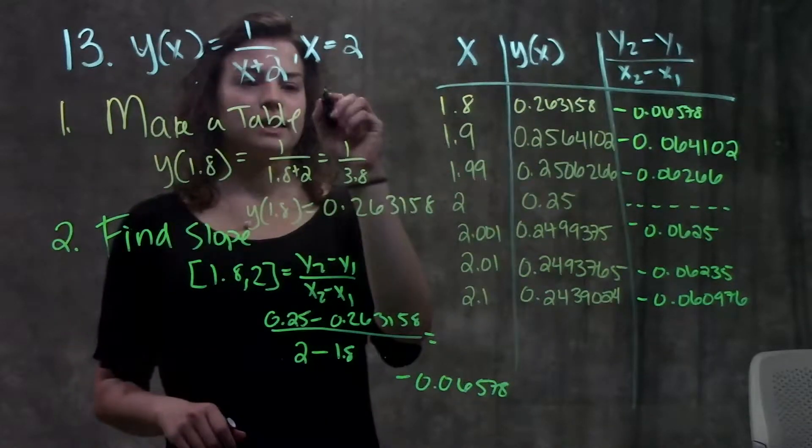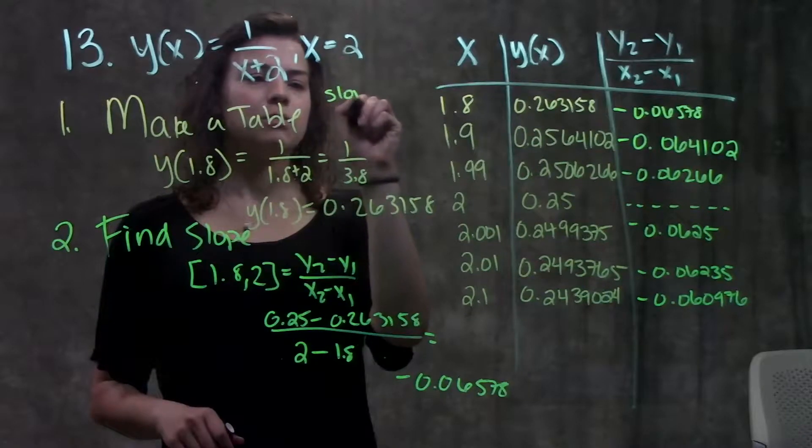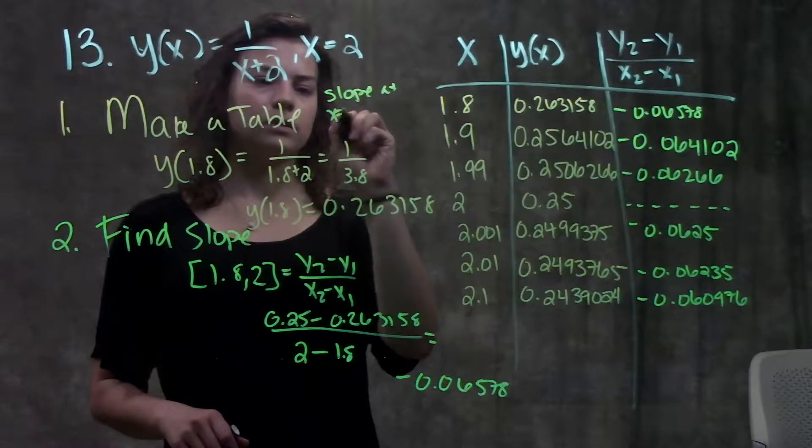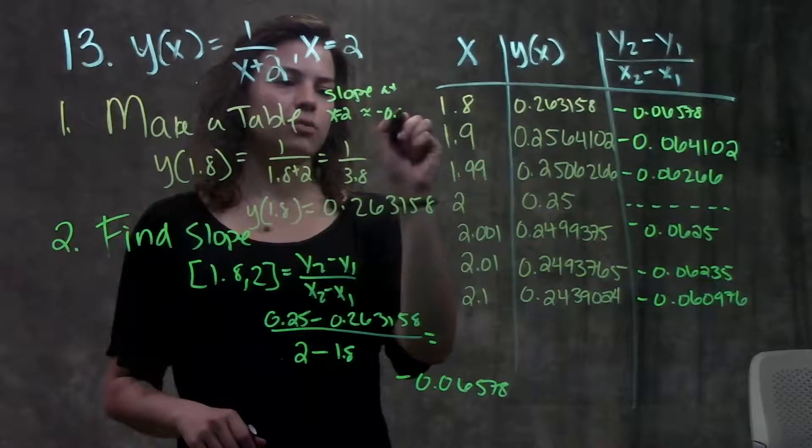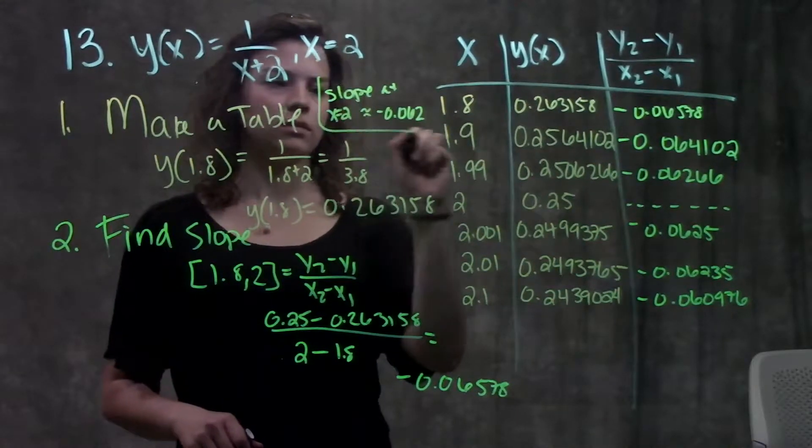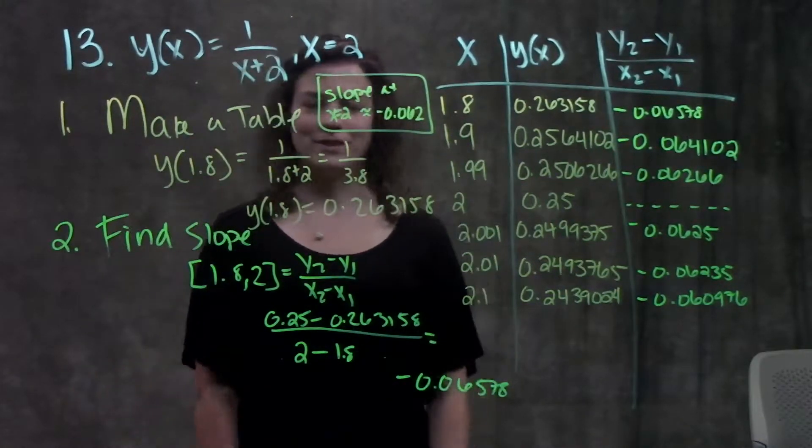And that's your answer. So the slope at x equals 2 is approximately negative 0.062. And that's it for this problem.